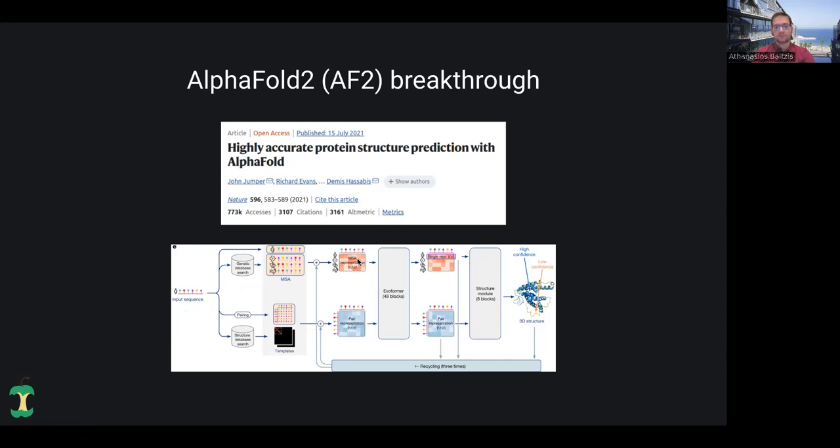AlphaFold consists of two main neural network blocks. This is the Evoformer, where it gets the MSA representation and the pair representation. The MSA representation tries to populate and optimize the pair representation matrix. Afterwards, we have the structure module where we convert these two types of tensors into a tensor that contains the translations and rotations of the model. During the learning process, this is optimized, and finally it gives us a final 3D structure. Of course, for better performance and accuracy, this happens three times. There are three recycling steps.